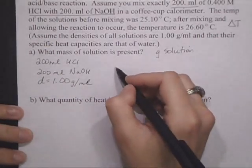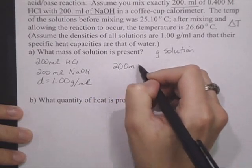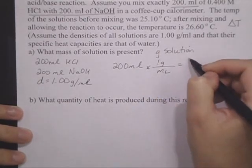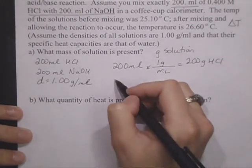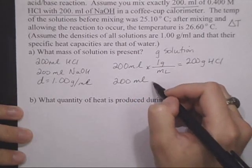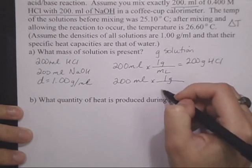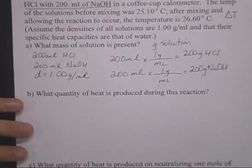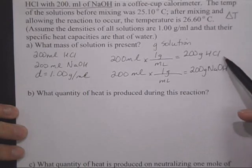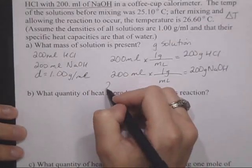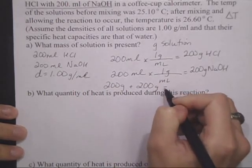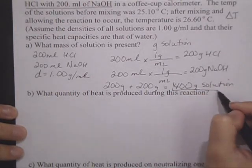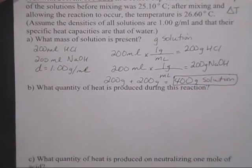So to get the mass of solution present, I am going to take each of my options. My HCl, 200 milliliters of HCl times one gram per milliliter gives me 200 grams of HCl. Then I am going to do the same thing for my NaOH, one gram per milliliter. And very simply, the total mass of solution present at that point, I have added both of these volumes or now masses together. So my solution has 200 grams plus 200 grams equals 400 grams of solution.